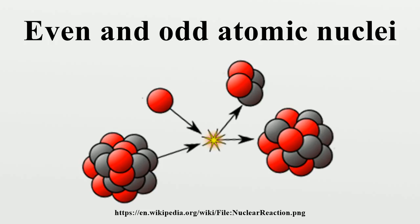Another effect is to prevent beta decay of many even-even nuclei into another even-even nucleus of the same mass number but lower energy, because decay proceeding one step at a time would have to pass through an odd-odd nucleus of higher energy. Double-beta decay directly from even-even to even-even, skipping over an odd-odd nuclide, is only occasionally possible, and even then with a half-life greater than a billion times the age of the universe. For example, the double beta-emitter 116-Cd has a half-life of approximately 2.9 × 10^19 years.